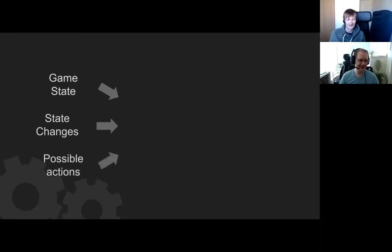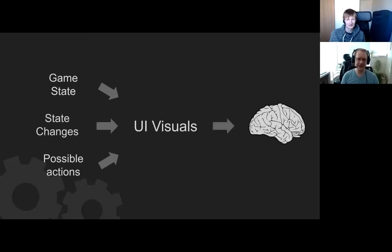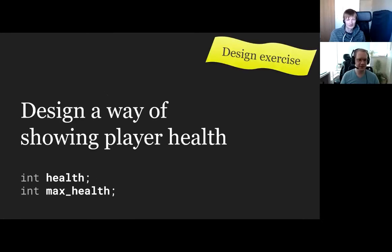These three different things — game state, state changes, and possible actions — you can factor all of those in when you're designing your UI visuals, and that will hopefully communicate what is going on in your game to the player's brain. Then they'll understand your game. You can design different ways of showing player health on your own — think about your game, design as many ways as you can.